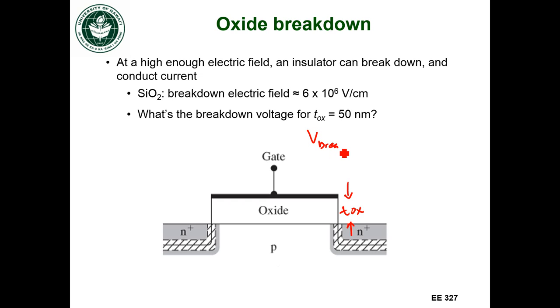So we're going to write down, we want to find out what that breakdown voltage will be. So it's going to be the electric field at breakdown multiplied by the oxide thickness. So 6 times 10 to the 6 volts per centimeter, and the oxide is 50 nanometers. So that's 50 times 10 to the negative 7 centimeters. And the breakdown voltage will be 30 volts.